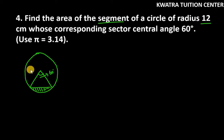So for segment we need to first find the area of sector, area of this sector, and then we have to subtract the area which is triangle AOB. So here the radius is 12 cm.